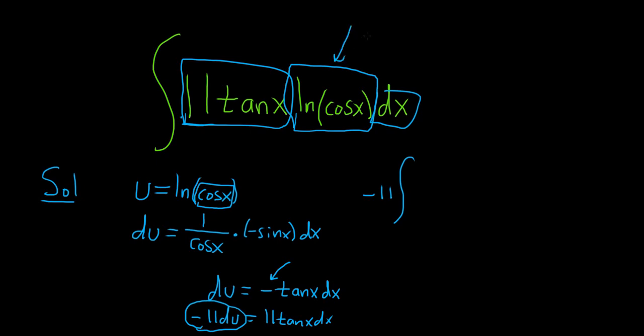Let's pull out that negative 11. We're left with this piece here, which is our u. So we have negative 11 integral of u du. Let me go over it one more time. This 11 tan(x) dx is negative 11 du, and this piece here is u.